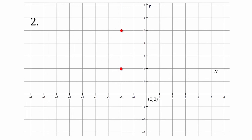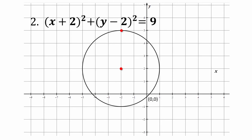For number 2, the center of the circle must be on (-2, 2). The radius is 3 units. This is the graph of (x + 2)² + (y - 2)² = 9.